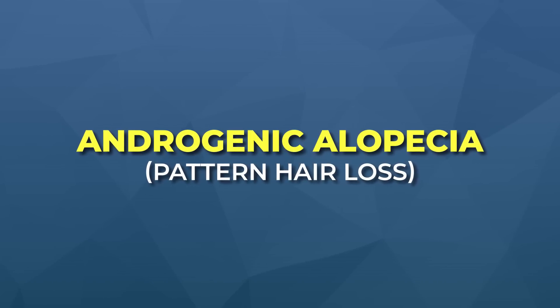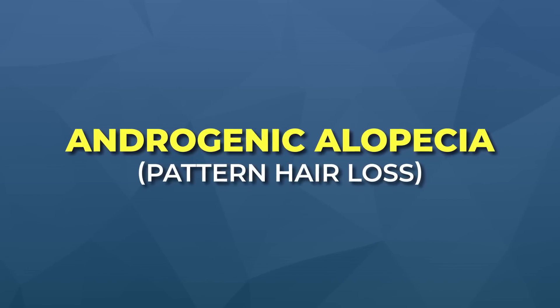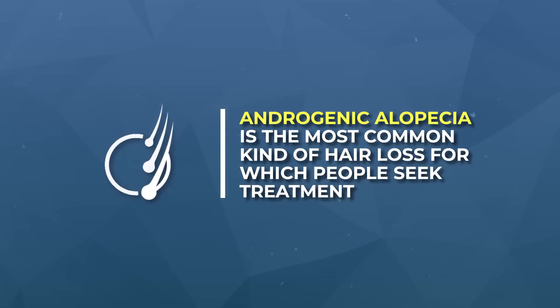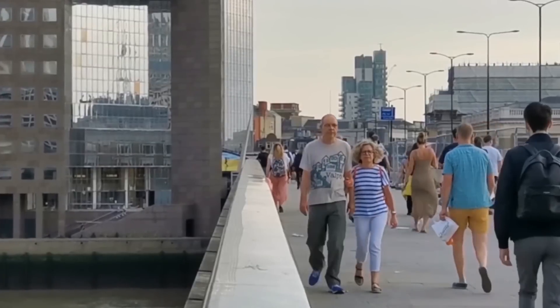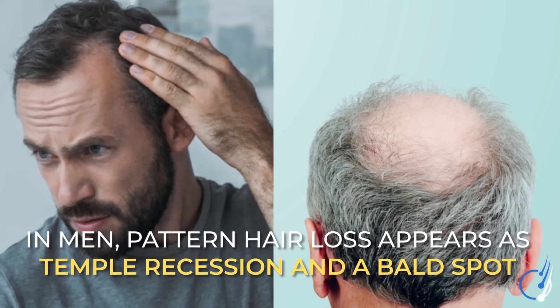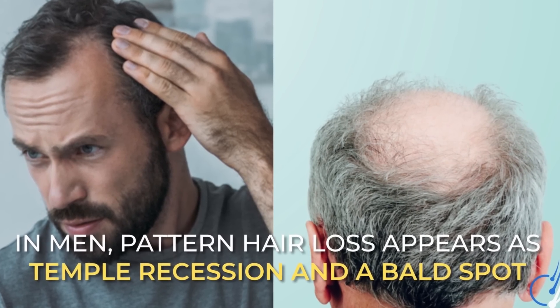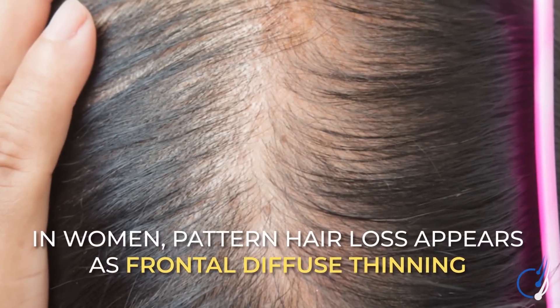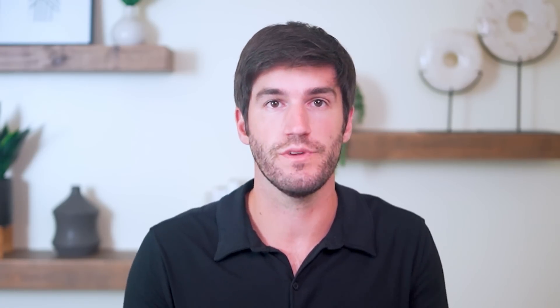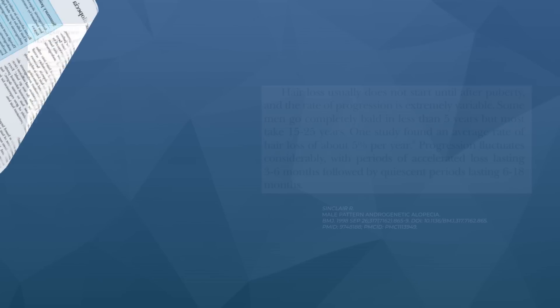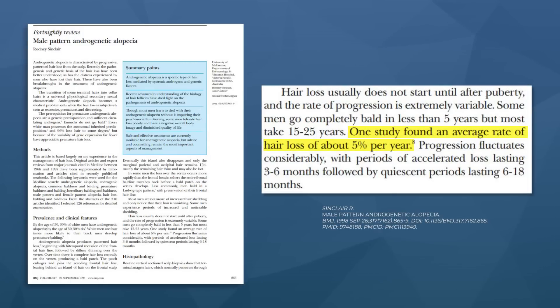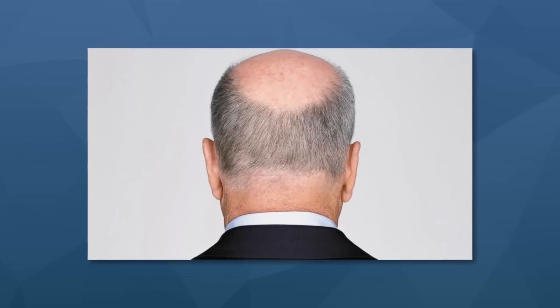The first major hair loss type is androgenic alopecia, also called male and female pattern hair loss. This is the most common kind of hair loss for which people seek treatment, and it's so prevalent you generally can't walk down a city block without spotting somebody with the condition. It typically starts after puberty. For men, it usually starts as temple recession or the formation of a bald spot. In women, it's generally diffuse thinning throughout the top of the scalp. It's chronic and progressive — without treatment it worsens, usually at a rate of about 5% loss in hair volume per year, which is why it often takes decades to progress to a fully slick bald scalp.